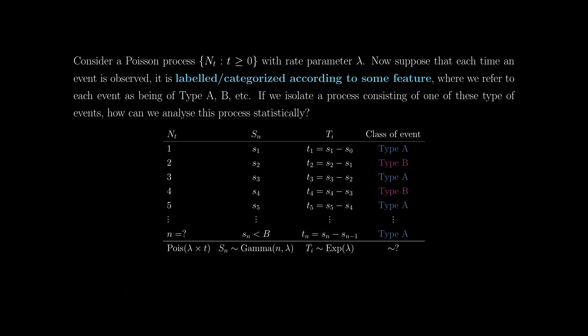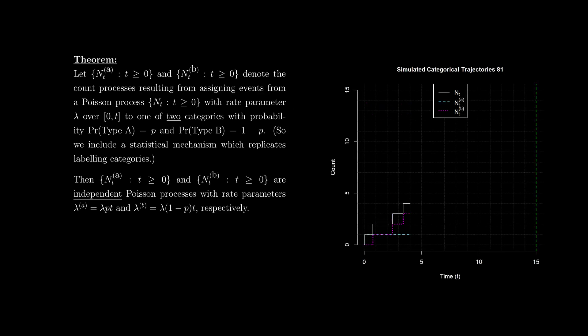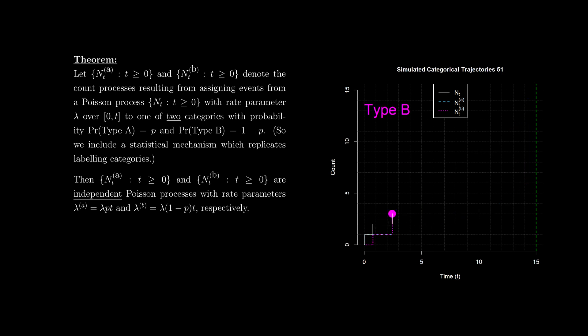Consider a Poisson process N(T) with rate parameter lambda. Each time an event is observed, it is labeled or categorized according to some categorical feature. We refer to each event as being of type A, B, C, etc. If we isolate a process consisting of one of these types of events, how can we analyze that process statistically? For that we have a nice theorem. Let N_T^A and N_T^B denote count processes resulting from assigning events from a Poisson process N(T) with rate lambda over some window 0 to T to one of two categories — a dichotomous assignment mechanism.